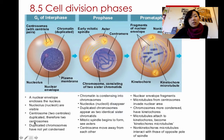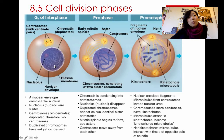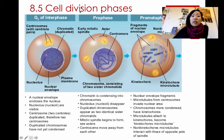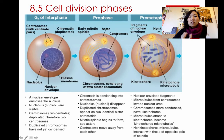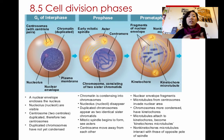As a recap: by the end of interphase at the end of G2, the cell has double the amount of DNA it actually needs, and the DNA is still in chromatin form — not yet condensed into chromosomes. At the beginning of mitosis, the very first phase is prophase. This is when the chromatin starts to condense and get packaged into chromosomes, making it easier for the cell to manage and divide its DNA material.